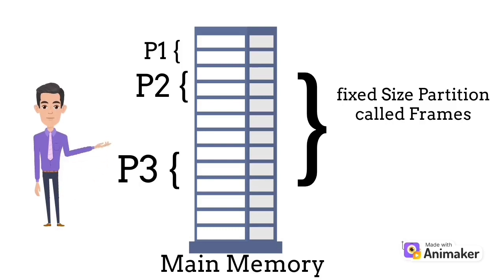If you see between P2 and P3, there are only two frames available. If we have to store a new process of size six bytes, it is not possible to store it there. It will be stored after P3 where three frames are vacant continuously. This phenomenon is called external fragmentation, and to reduce this, we use paging.